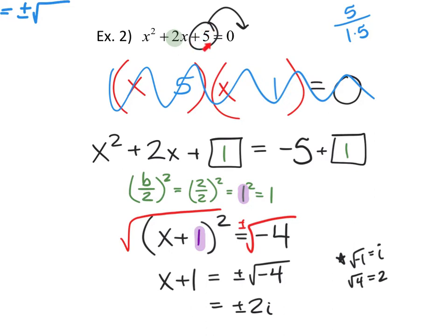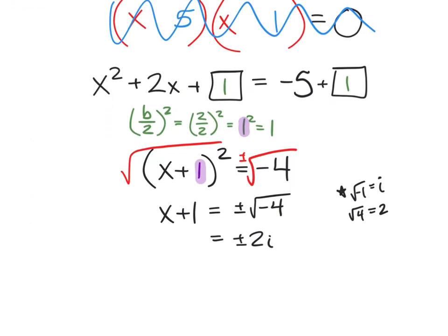What we did was set up the formula by moving the constant c value to the other side, giving us space to add something to both sides. The thing we're adding is b divided by 2, squared. b is 2, so 2 divided by 2 is 1, and 1 squared is also 1 — so we add 1 to both sides. That allows us to factor the left side as (x+1)², and we take the square root of both sides with the plus-minus. We get x+1 = ±√(-4), and since √(-1) = i, √(-4) = 2i.